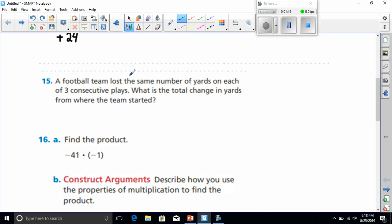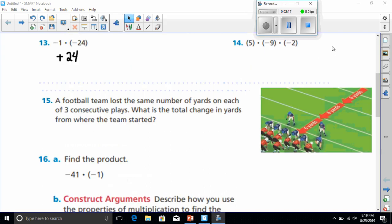Number 15 says, a football team lost the same number of yards on each of three consecutive plays. What is the total change in yards from where the team started? They say they lost the same number of yards on each of the three consecutive plays. And we need to know what is the total change in yards from where the team started. To do this problem, I had to go find the picture that was in your book and paste it on here. And that way it makes more sense because we really didn't know by looking at the question exactly how many yards that they lost each time.